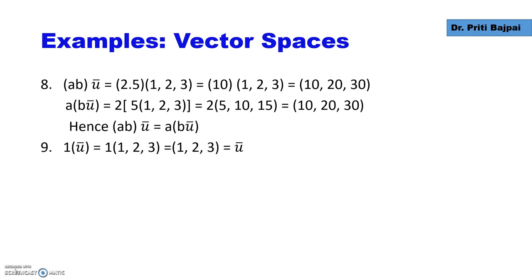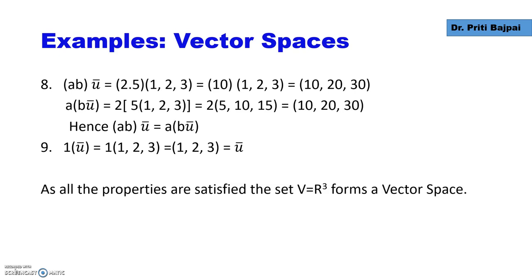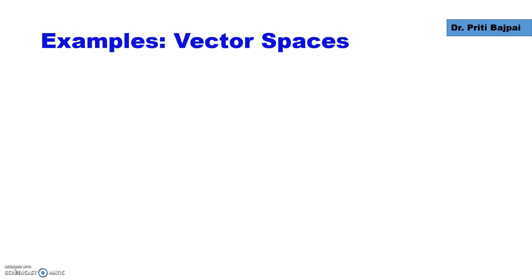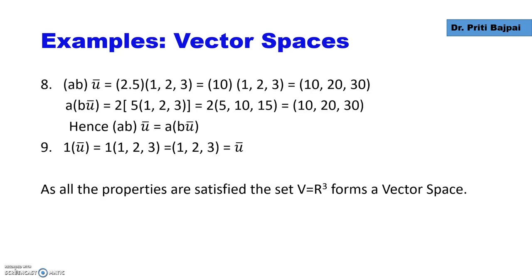The last property: 1·U = 1·(1,2,3) gives us the point (1,2,3) back. All the properties are satisfied, so points in R³ form a vector space.